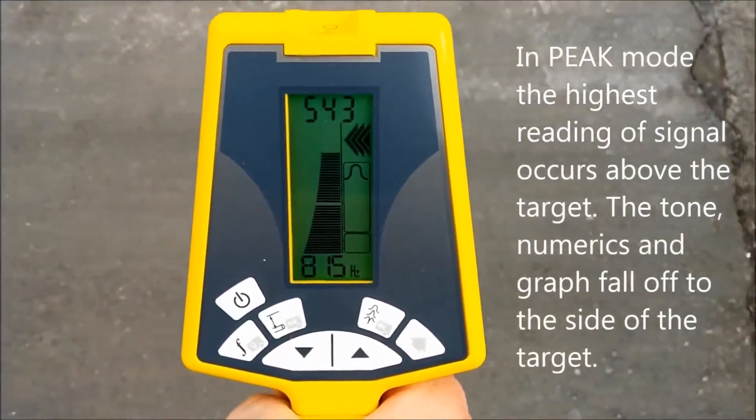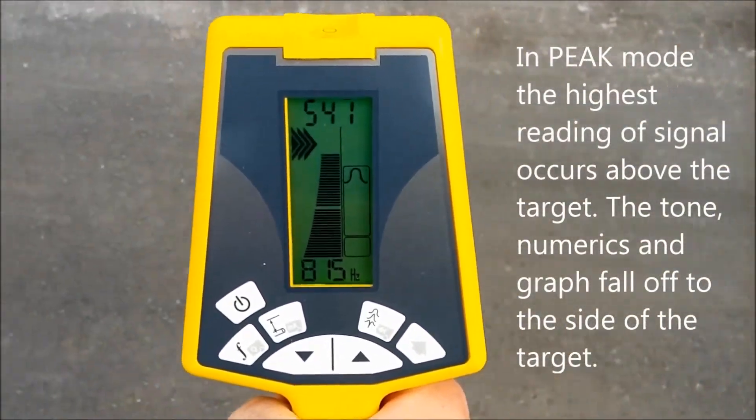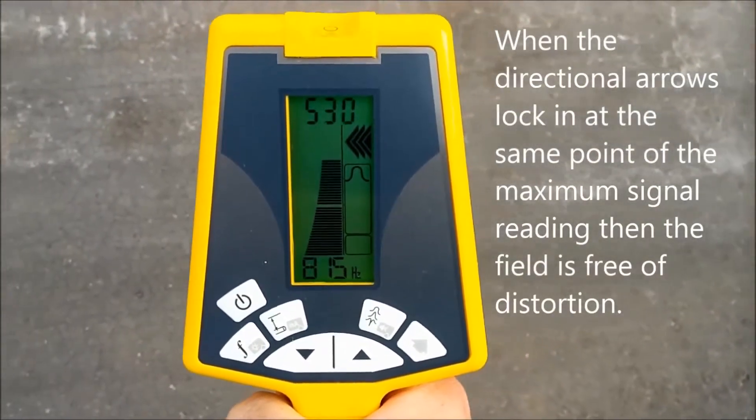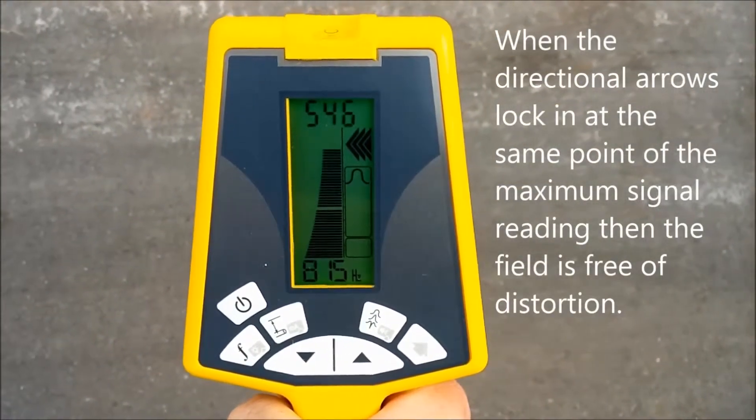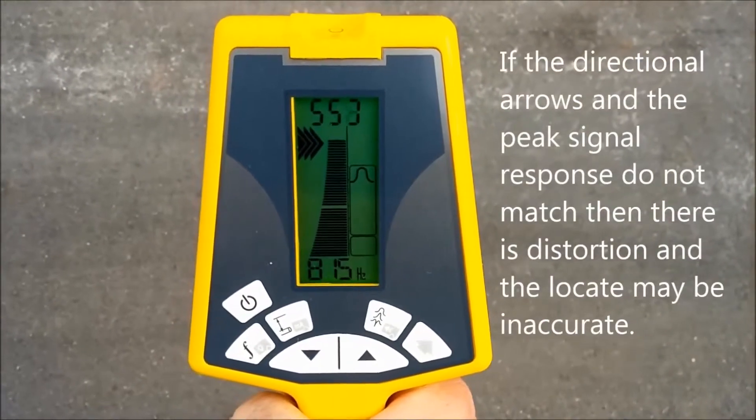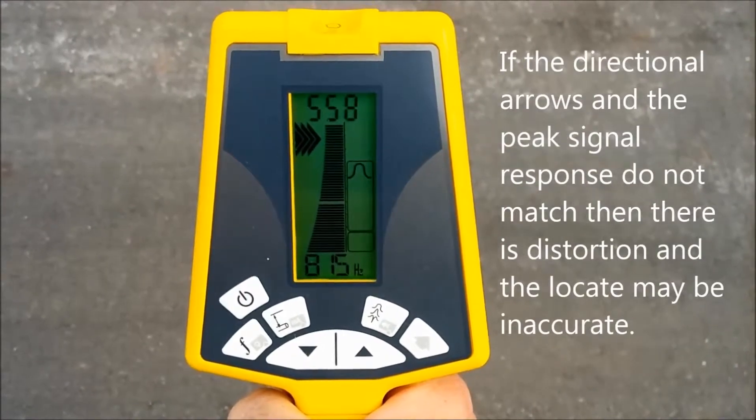In peak mode, the highest reading of signal occurs above the target. The tone, numerics, and graph fall off to the side of the target conductor. When the directional arrows lock in at the same point of the maximum signal reading, then the field is free of distortion. If the directional arrows and the peak signal response do not match, then there is distortion and the locate may be inaccurate.